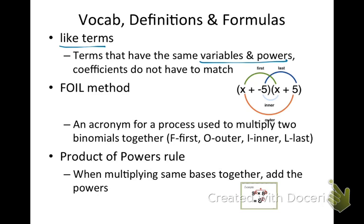The second thing we're going to use is something called the FOIL method. FOIL, F-O-I-L, is just an acronym for a process we use to multiply two binomials together. F stands for the first terms together. So our first terms are X and X, and we multiply those together to get X squared. O stands for our outer.